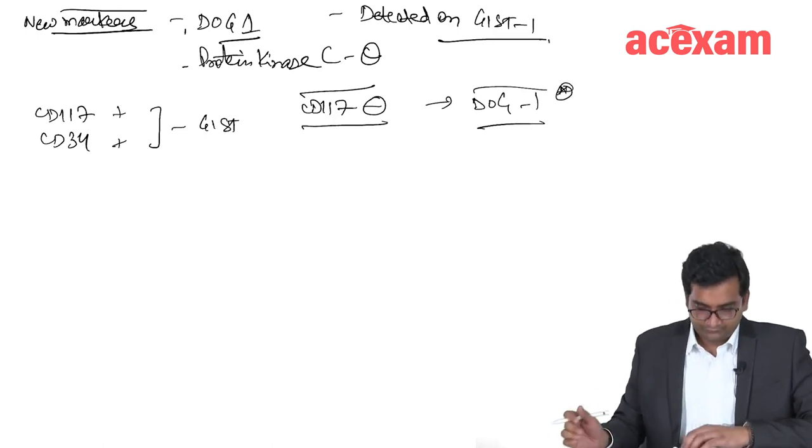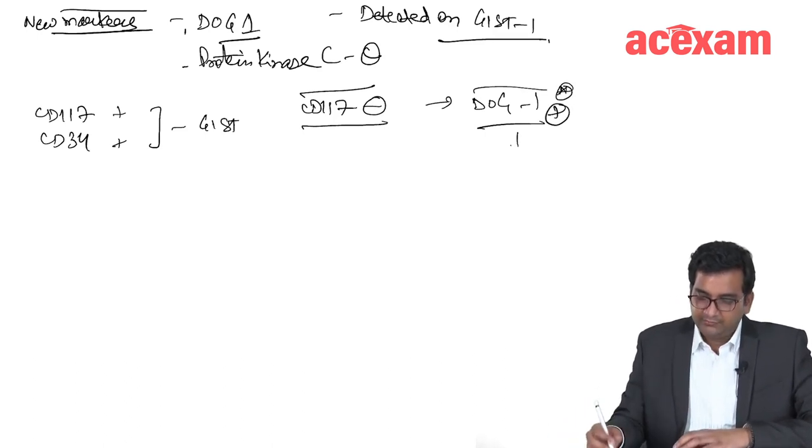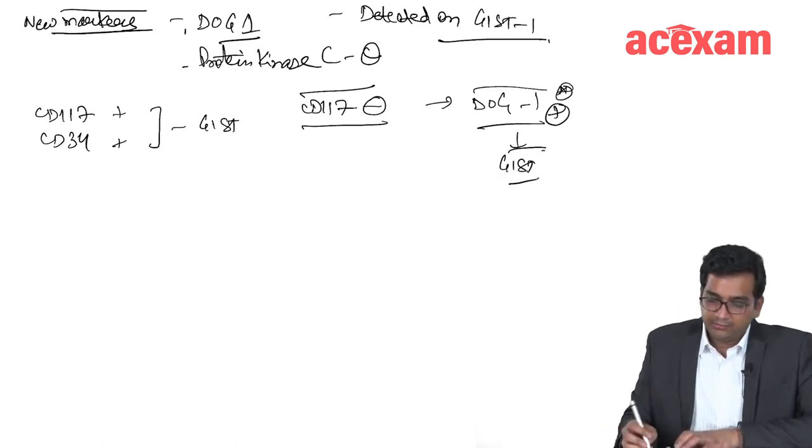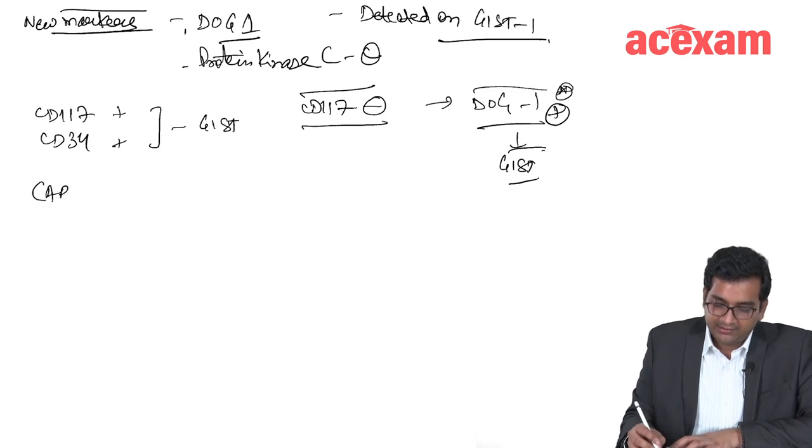In patients where CD117 is negative, DOG1 is identified as positive. If it is positive, then we diagnose it as GIST.